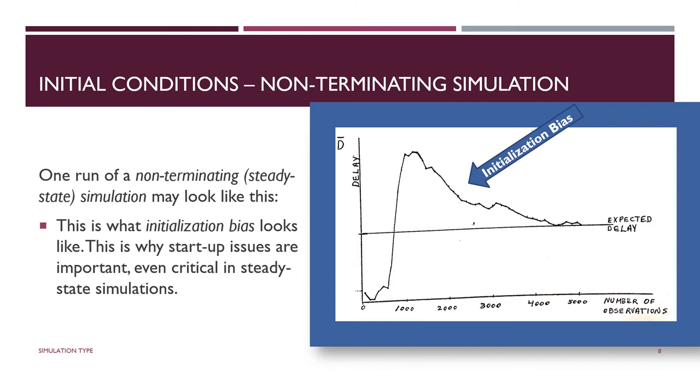The picture you see is a realization of what one run of a steady state or non-terminating simulation might look like. The x-axis is time, or in this case, number of observations, number of entities moving through the system. But basically that's a proxy for time or vice versa. And the vertical axis is a delay. And you could be talking about delay in queue or time spent total in the system. So you see what initialization bias looks like.